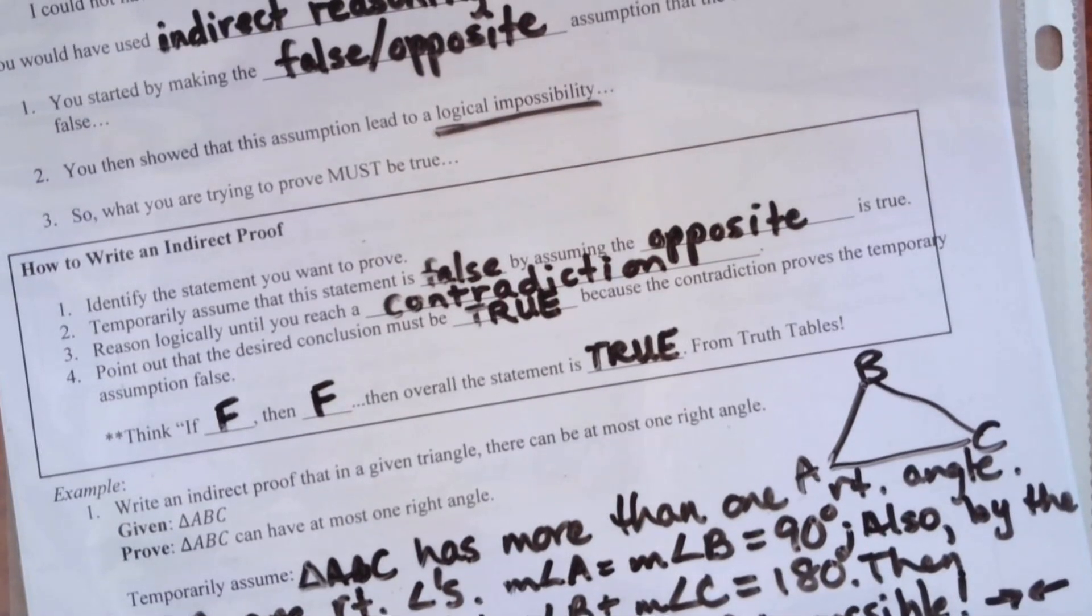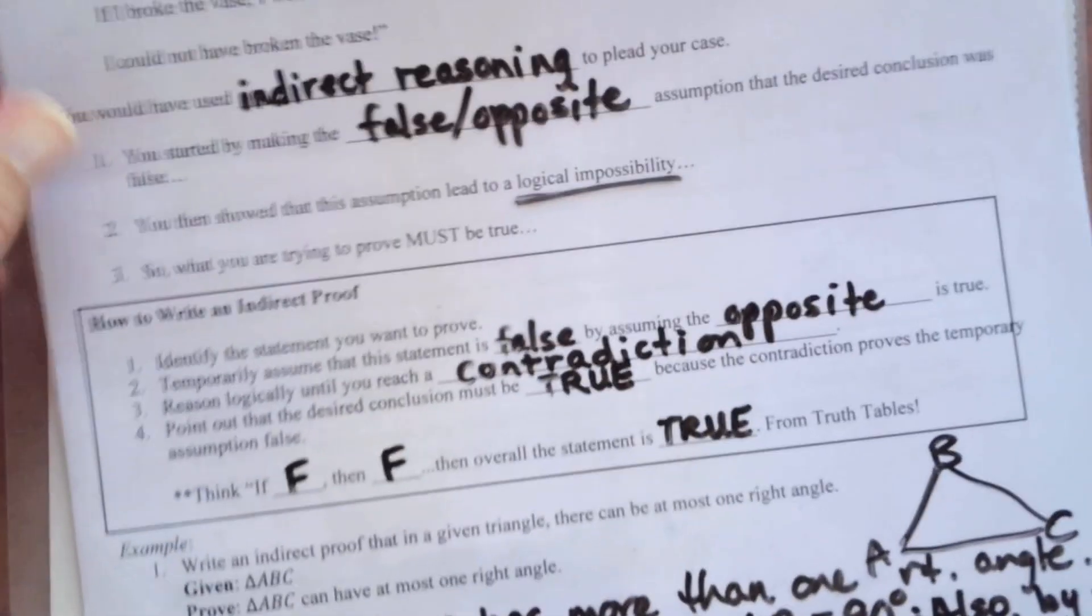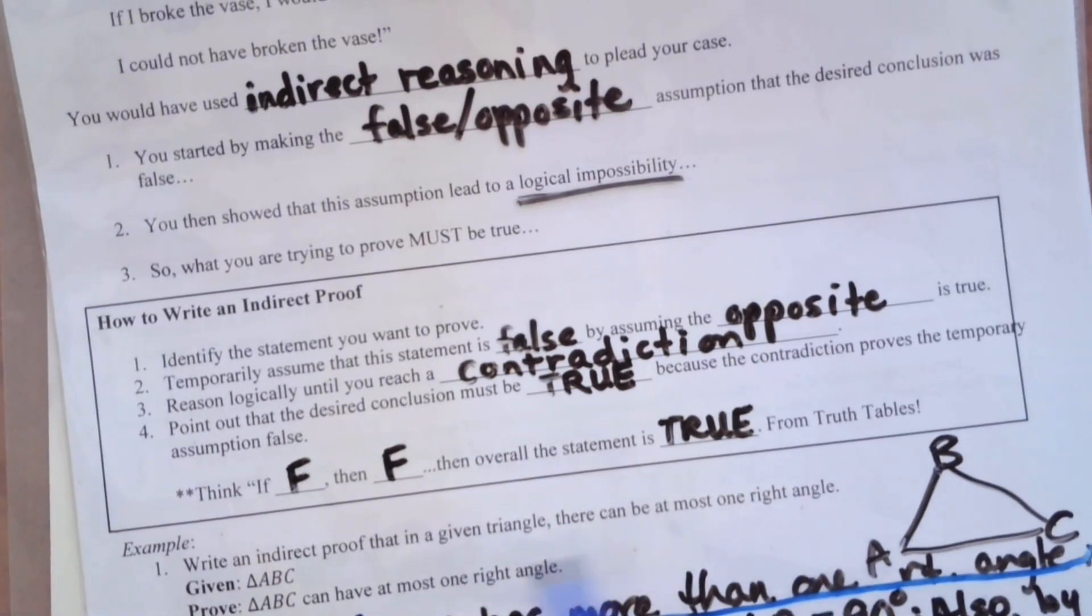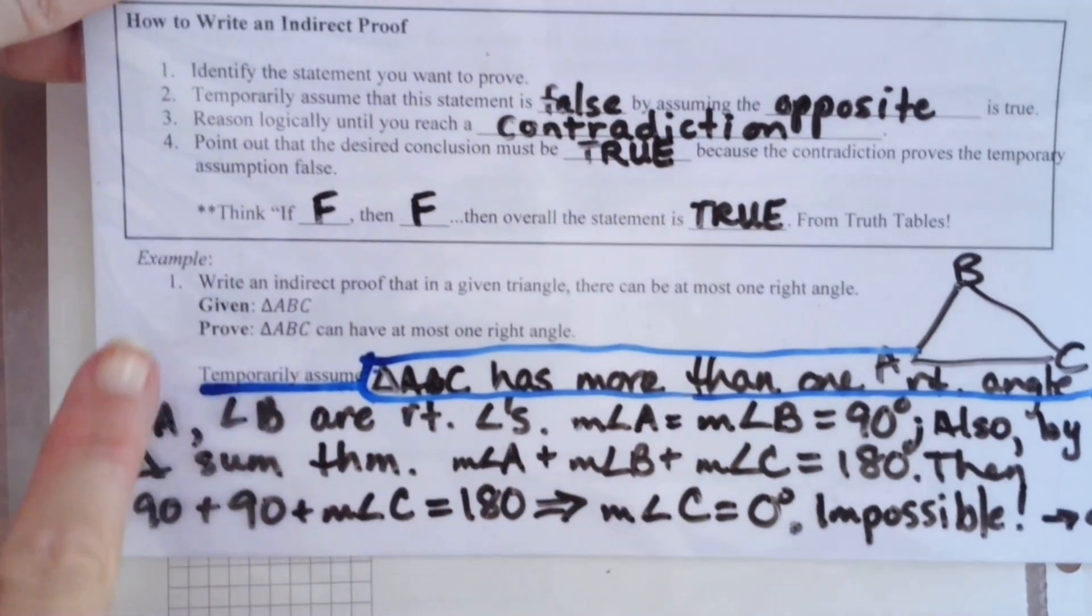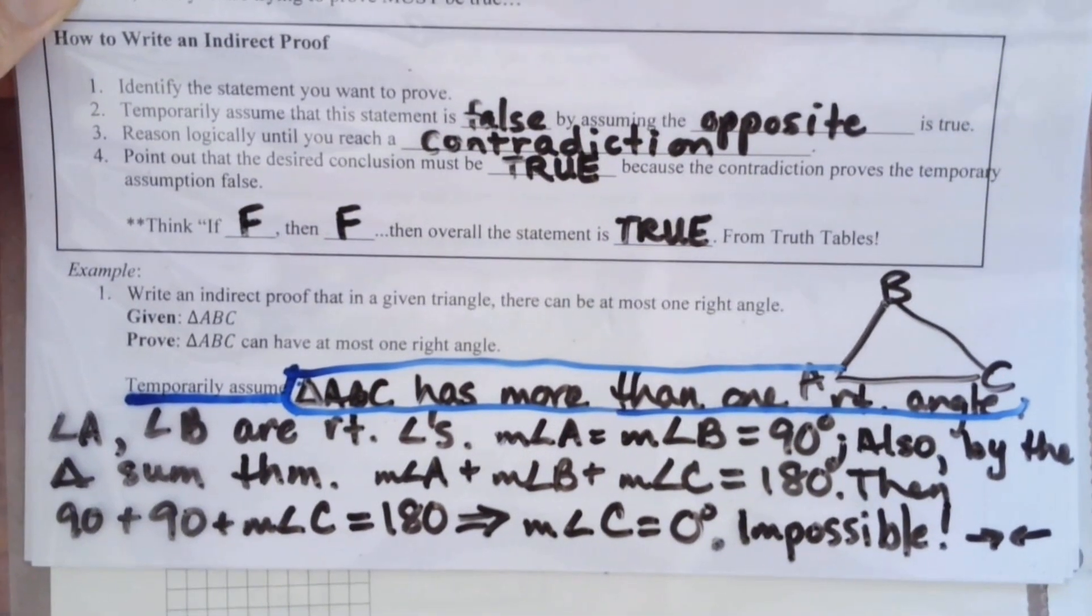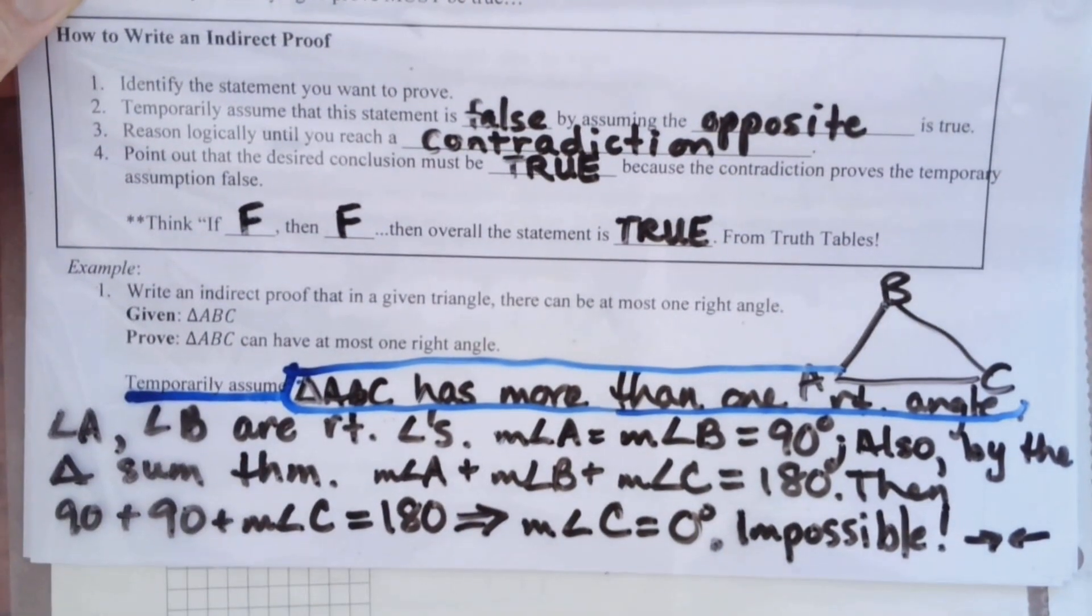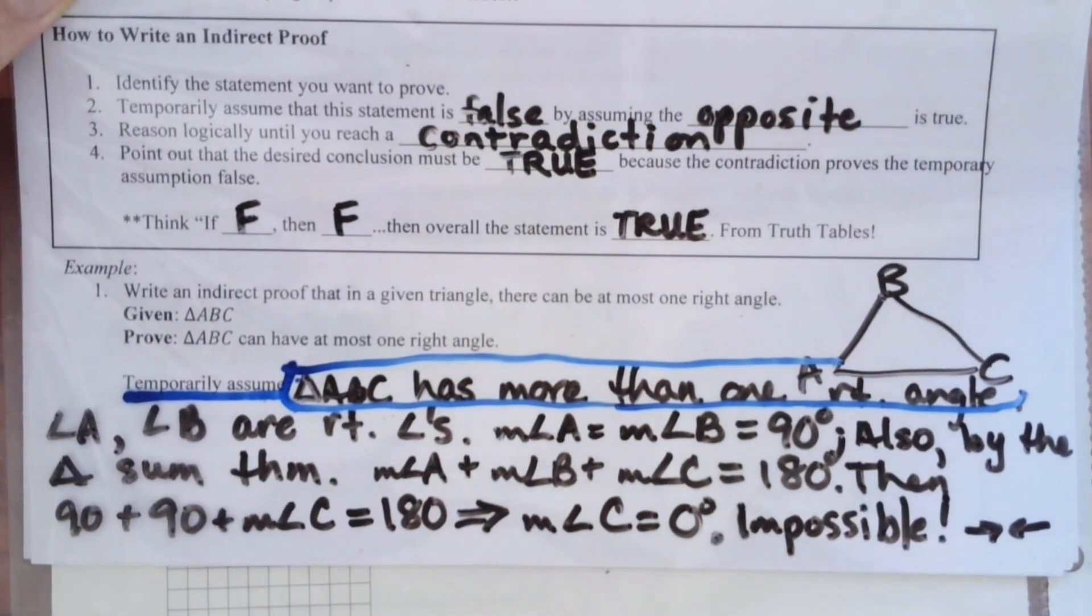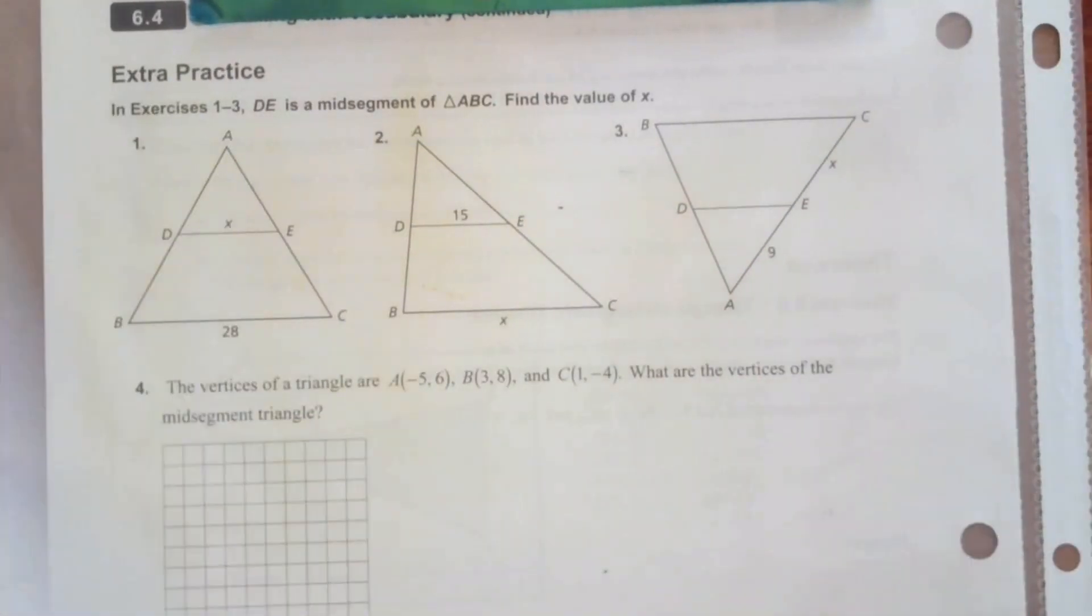So, if we've just shown a contradiction, then that means that this supposition here, this temporarily assume, is false. So, that means it has to be true. So, you're assuming the opposite, and then you're showing that that can't happen. Therefore, what's left is the truth. Therefore, ABC can have only one, at most, one right angle, which I would write down here, but I don't have any more space on my page. So, that's my fault there, but you would just write that last conclusion. Any questions? All right. So, you know I'm trying to save paper. So, I'm going to erase this before I go on to the next page here.